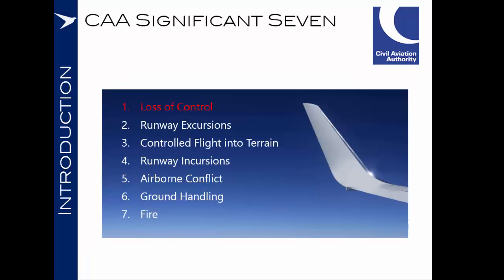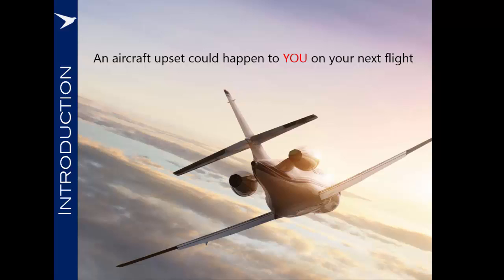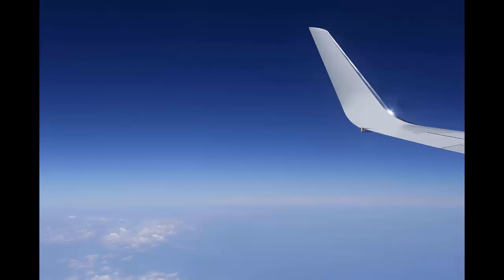The Civil Aviation Authority of the UK identified seven greatest risks to aviation and identified loss of control in flight as their number one priority. Most significantly, they noted that an aircraft upset could happen at any time — it could happen to you on your next flight. By being part of this program, you are ahead of the curve and taking your fate into your own hands, enhancing the likelihood of your survival and that of your passengers and crew.